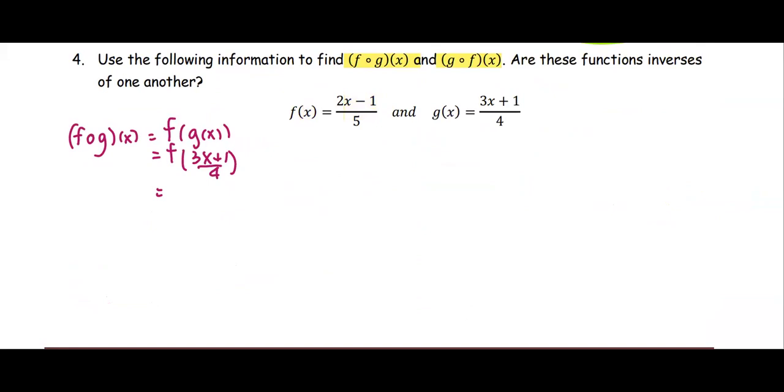For the function f, the input is multiplied by 2, so 2 times the input which is 3x plus 1 divided by 4, subtracted by 1, and the entire thing divided by 5. We're going to treat it in the easier way. As you see, 2 and 4 reduce, and then when you divide it means multiply by the reciprocal.